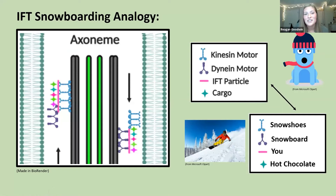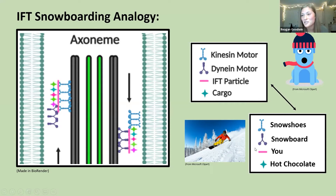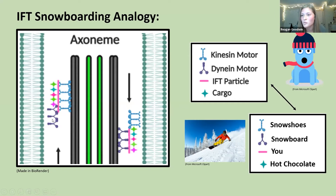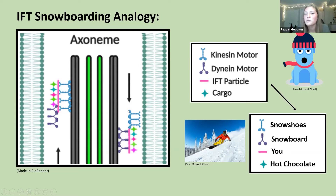An analogy for this is snowboarding. Think of your kinesin motors as snowshoes, your dynein motors as a snowboard, and the IFT particle as you — with your cargo being hot chocolate. The doublet microtubules are your mountain. You bind to your snowshoes, hold on to your hot chocolate, and bring your snowboard so you don't have to walk back down. You walk up to the top, give the ski lift worker a cup of hot chocolate, then switch from your snowshoes to your snowboard for the trip back down — and of course, you bring the snowshoes back too.